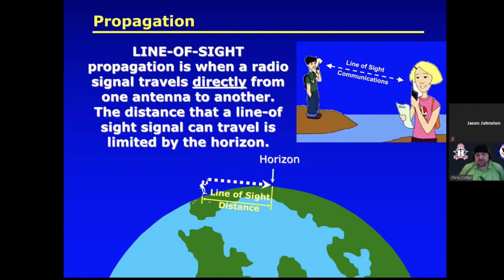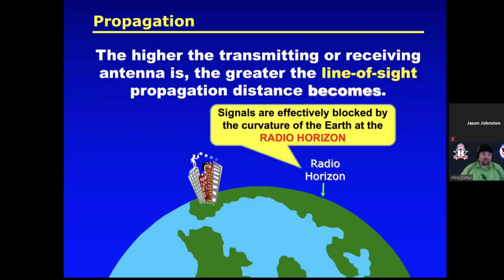Line of sight propagation is when a radio signal travels directly from one antenna to another. Your cutoff point is going to be the horizon, maybe just a little past it. The higher the transmitting or receiving antenna is, the greater the line of sight propagation distance becomes.